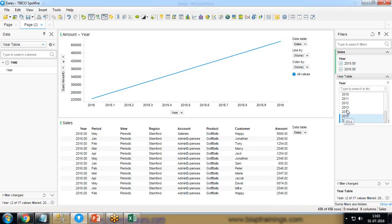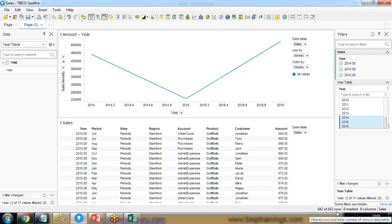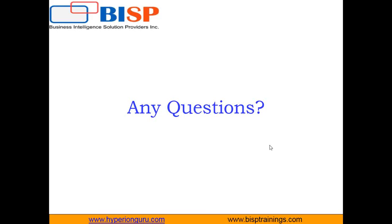Similarly, if I select 2014, 2015, and 2016 and click refresh, there are 642 rows. That's how we can load data on demand into TIBCO Spotfire. That's all for this video. I hope you found it interesting. If so, please subscribe to our YouTube channel, don't forget to hit the like button, and you can share your comments on bisptrainings.com or on the YouTube channel. Keep watching, have a nice day, goodbye.